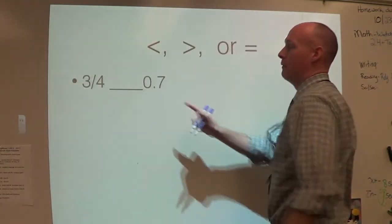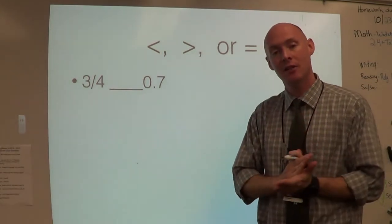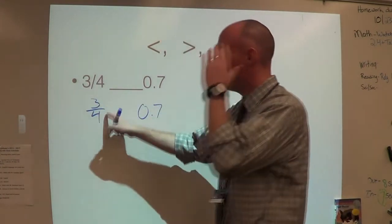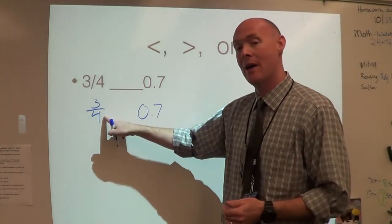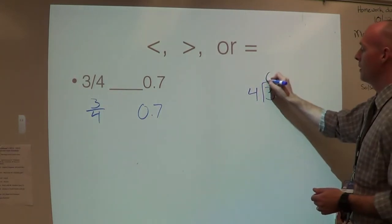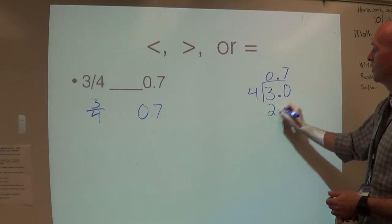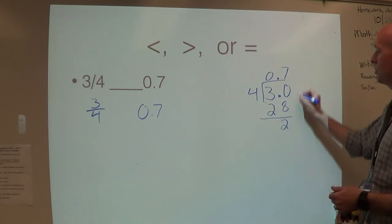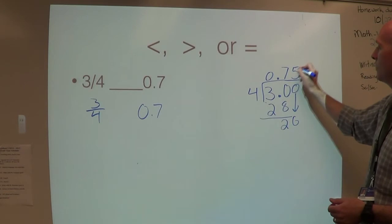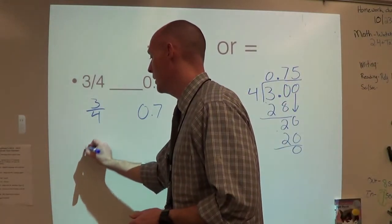Here I have three-fourths compared to seven-tenths. What I said was just change everything to decimals. How do I change three-fourths to a decimal? You divide the numerator by the denominator. Three divided by four — it can't go in, so we put a decimal and annex a zero. Four goes into thirty seven times; seven times four is twenty-eight; subtract, that is two; annex a zero; four goes into twenty five times; five times four is twenty. So three-fourths is really just 0.75.